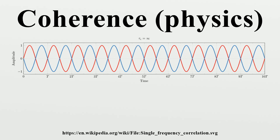Regarding the occurrence of quantum coherence at a macroscopic level, it is interesting to note that the classical electromagnetic field exhibits macroscopic quantum coherence. The most obvious example is the carrier signal for radio and TV, which satisfies Glauber's quantum description of coherence.